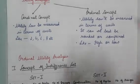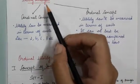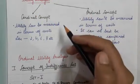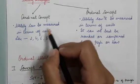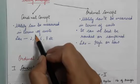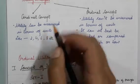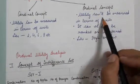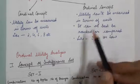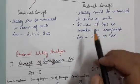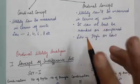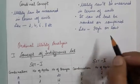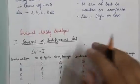Hello students, today we will be studying about utility analysis. We have discussed the cardinal concept; here we will be comparing both cardinal and ordinal. In the cardinal concept, utility is measured in units, as we used to do in the law of diminishing marginal utility and equi-marginal utility. In the ordinal concept, we can't measure utility in units, so we have to rank or compare it.